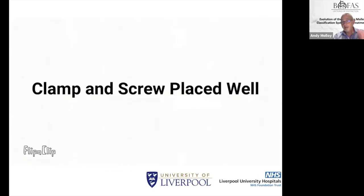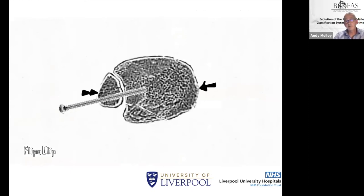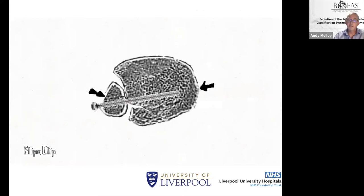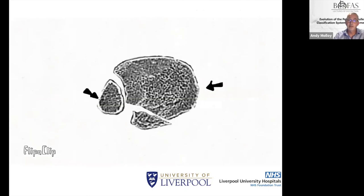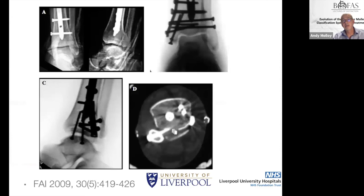We need to be careful when placing our clamp and screw to maintain accuracy of reduction. If you over-tighten it, the fibula subluxes posteriorly, and if you really over-tighten it, you can get it out the back and put the screw across the fracture sides. This may sound impossible, but there is a published example from FAI in 2009.